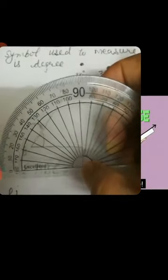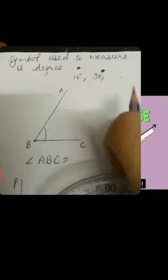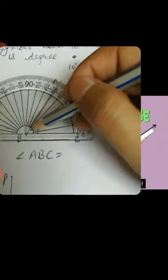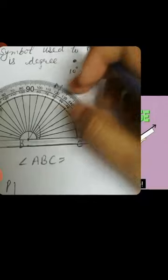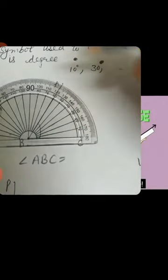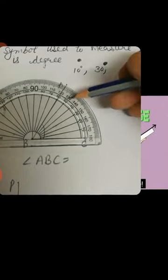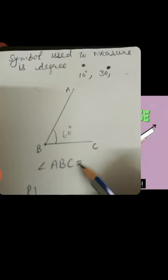Now see how to measure an angle. Keep the center point of the protractor on the corner, or vertex, of an angle. Touch the center point on that vertex. And keep the base line on one of the lines of the angle. Here there is formation of a 60 degree angle. This line lies on 60, moving from 0, 10, 20, 30 up to 60. So that angle is 60 degree. You can write angle A, B, C is equal to 60 degree.